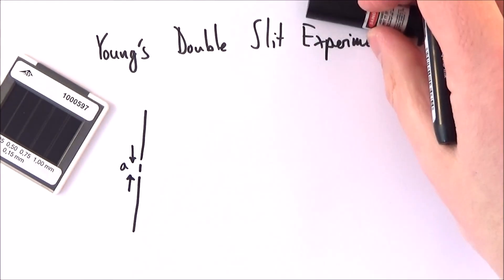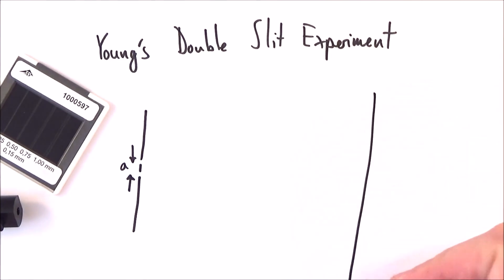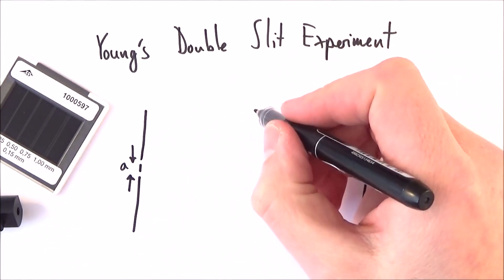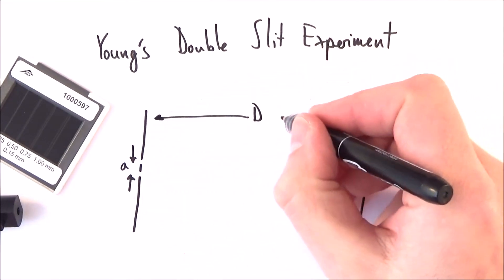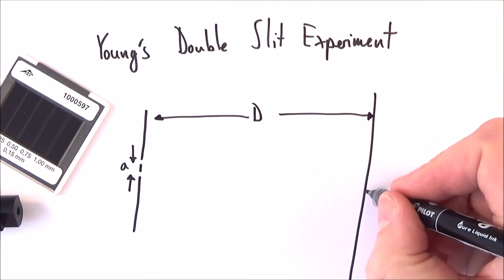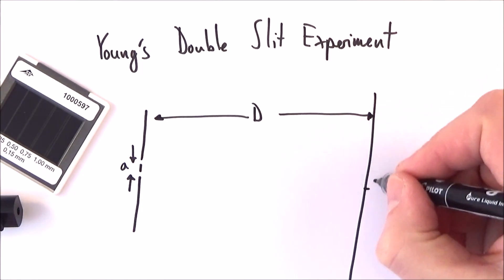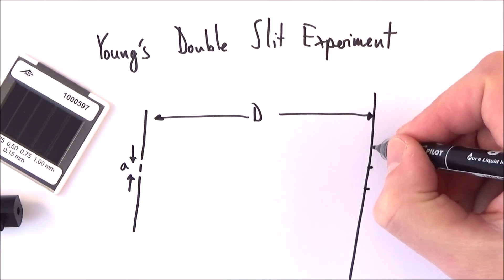We then shine the light that's coherent through this onto a screen. Now the screen is a distance of d meters away, so the distance from the slit to the screen is a distance big d. What we tend to find is we get a bright point in the middle, then a point where there's destructive interference of light, then another bright point.